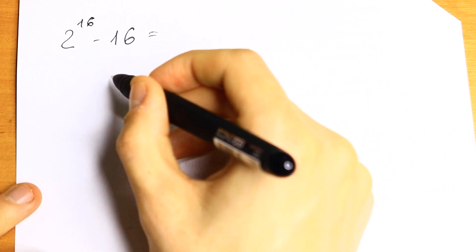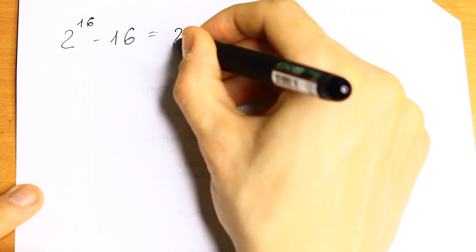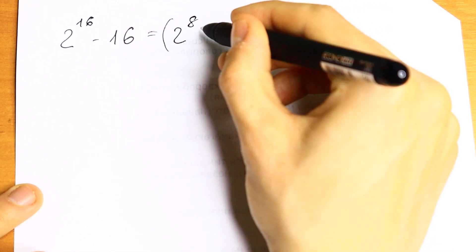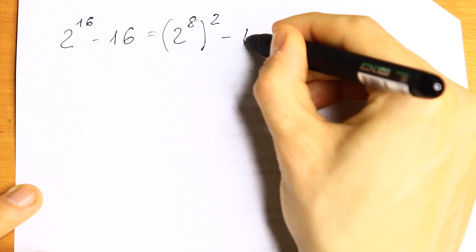Take a look. We need to know a formula because if we write this 2 to the 16th power as 2 to the 8th power squared, and minus 4 squared, we have difference of squares.